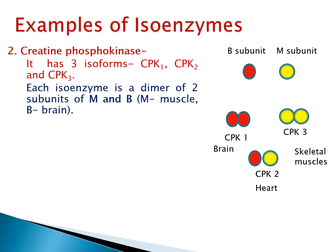The second example is creatine phosphokinase (CPK), which has three isoforms: CPK1, CPK2, and CPK3. Each isoenzyme is a dimer consisting of two subunits — the B subunit (brain) and the M subunit (muscle). CPK1 has two B subunits and is seen in the brain; CPK2 is a combination of B and M subunits found in the heart; CPK3 is a combination of two M subunits seen in the skeletal muscles.